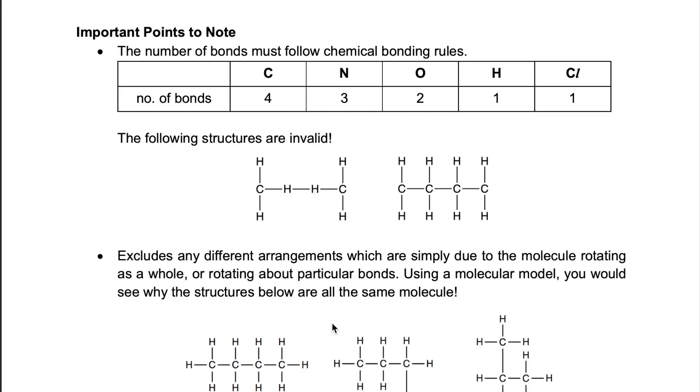When we draw structures for organic molecules, it is important to take note of the following points. Firstly, we must remember our chemical bonding rules, meaning that carbon forms four bonds, oxygen two, hydrogen one, and so forth. So for example, the following structures here will be invalid because carbon only has three bonds, and hydrogen has two bonds. This would not be possible by chemical bonding given the number of valence electrons each of these elements have.